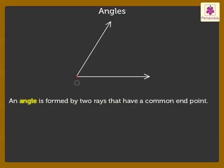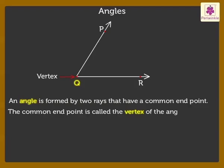So, here Q is the common end point of ray QP and ray QR. Here, the common end point Q is called the vertex of the angle.